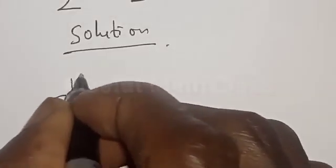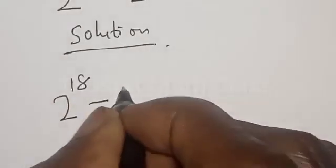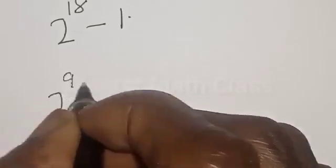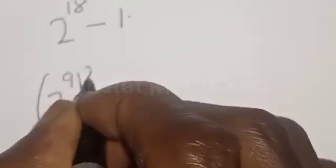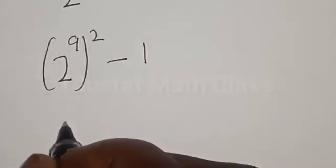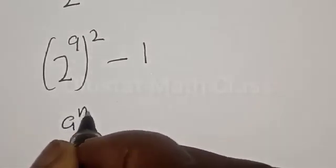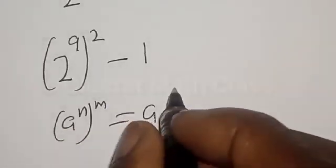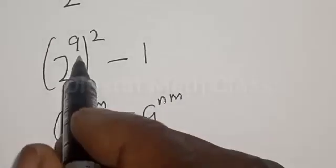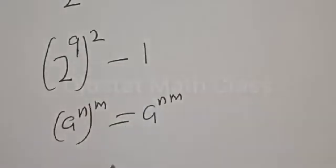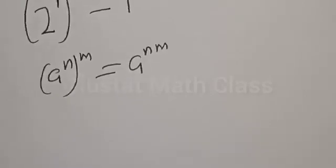2 raised to power 18 is 2 raised to power 9 raised to power 2, minus 1. Remember, if you have a raised to power n raised to power m, that's the same thing as a raised to power nm. That is, if you have 9 times 2, that will give you 18 back. So we have: